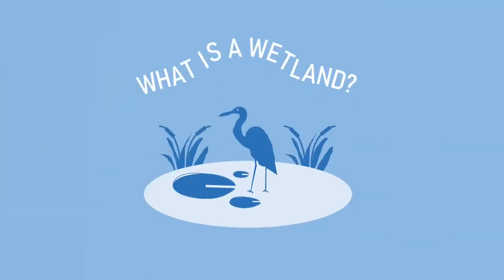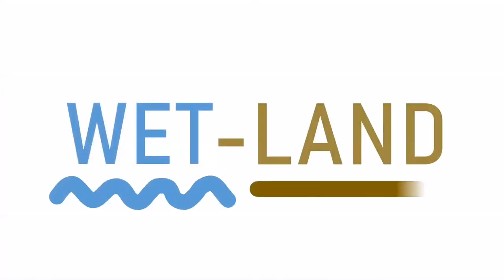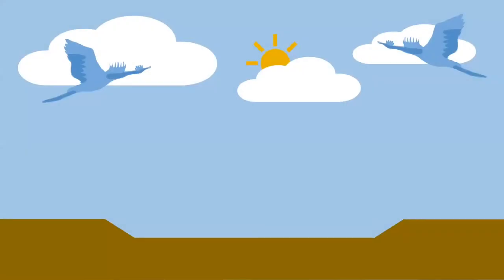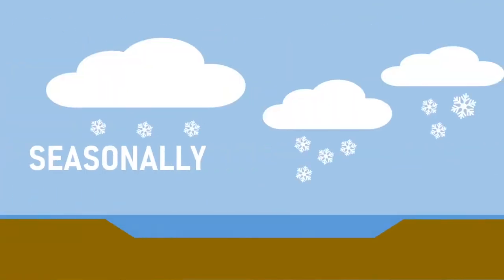So you may wonder, what is a wetland? Well, the name says it all. A wetland is an area of land that remains wet permanently or seasonally.